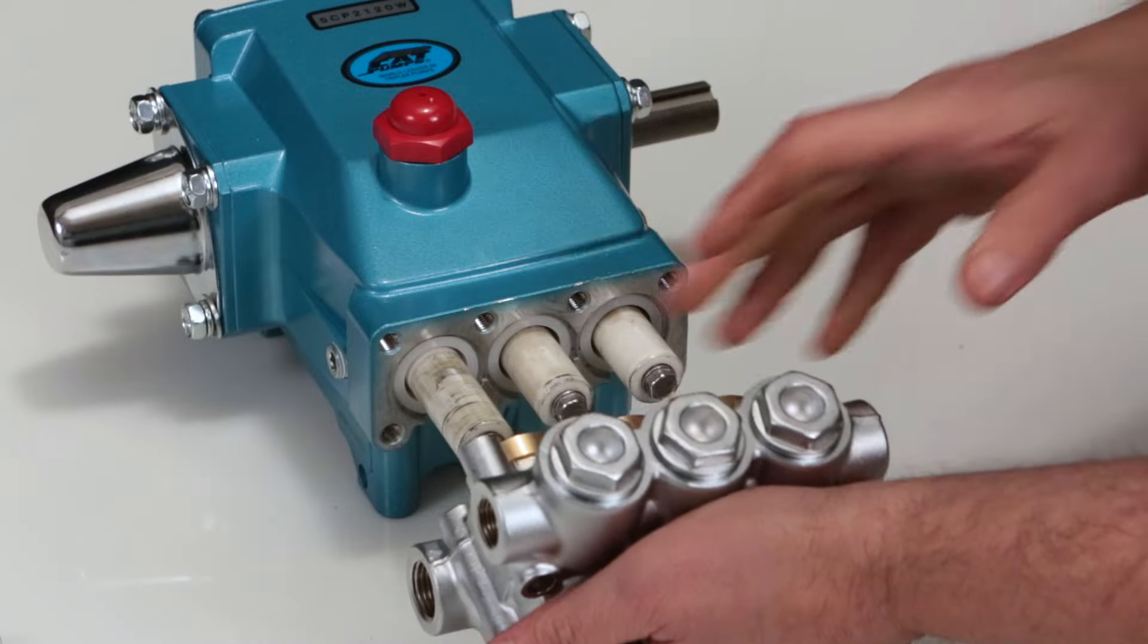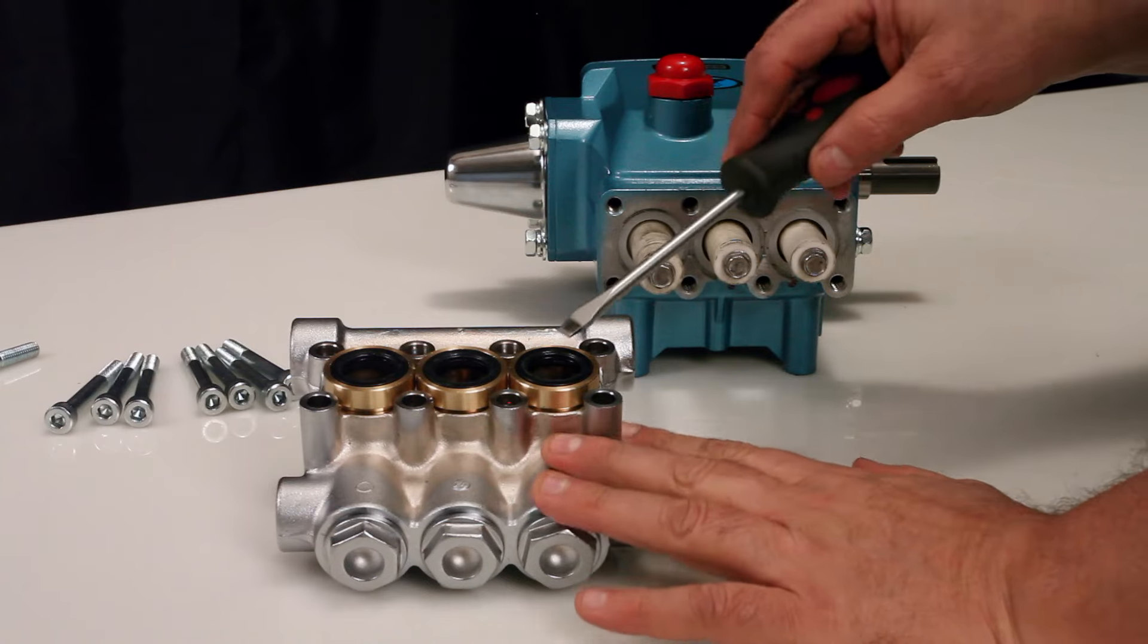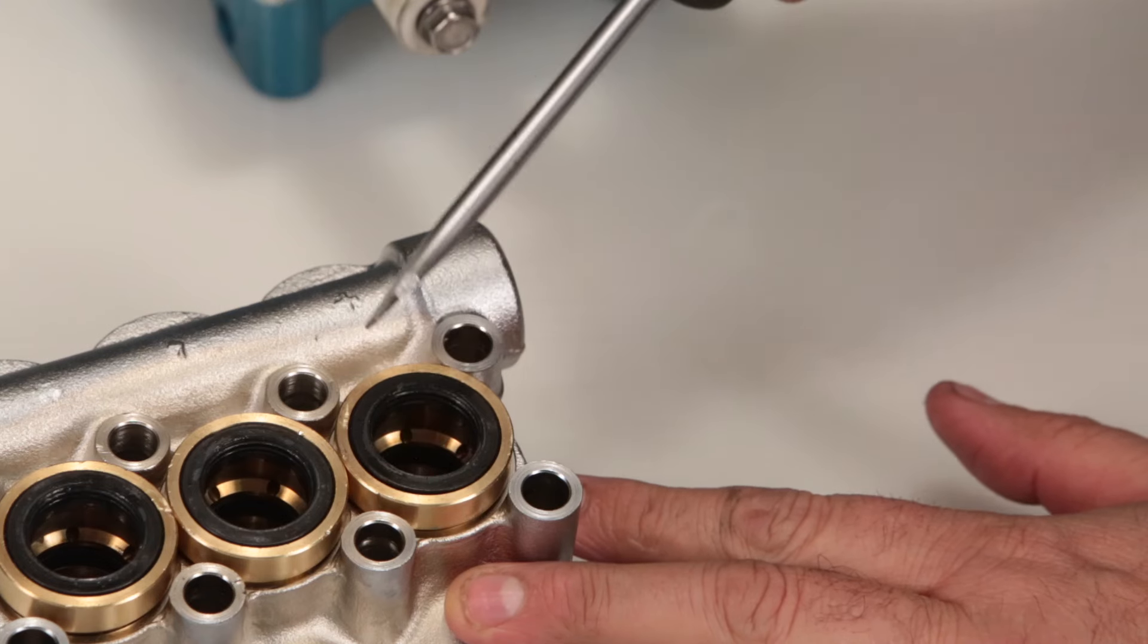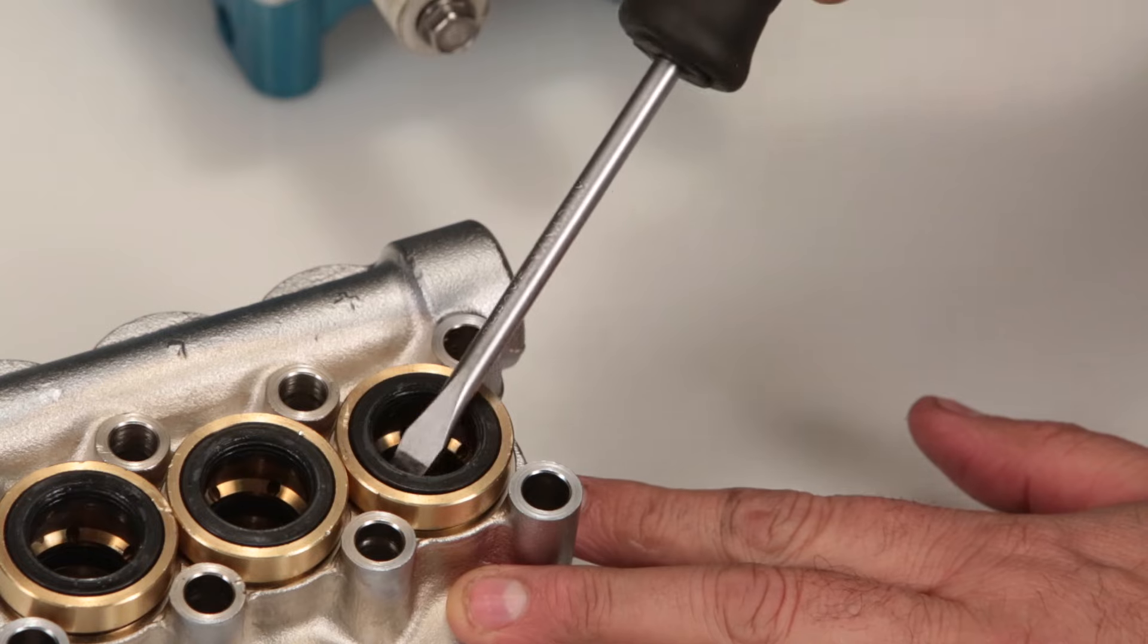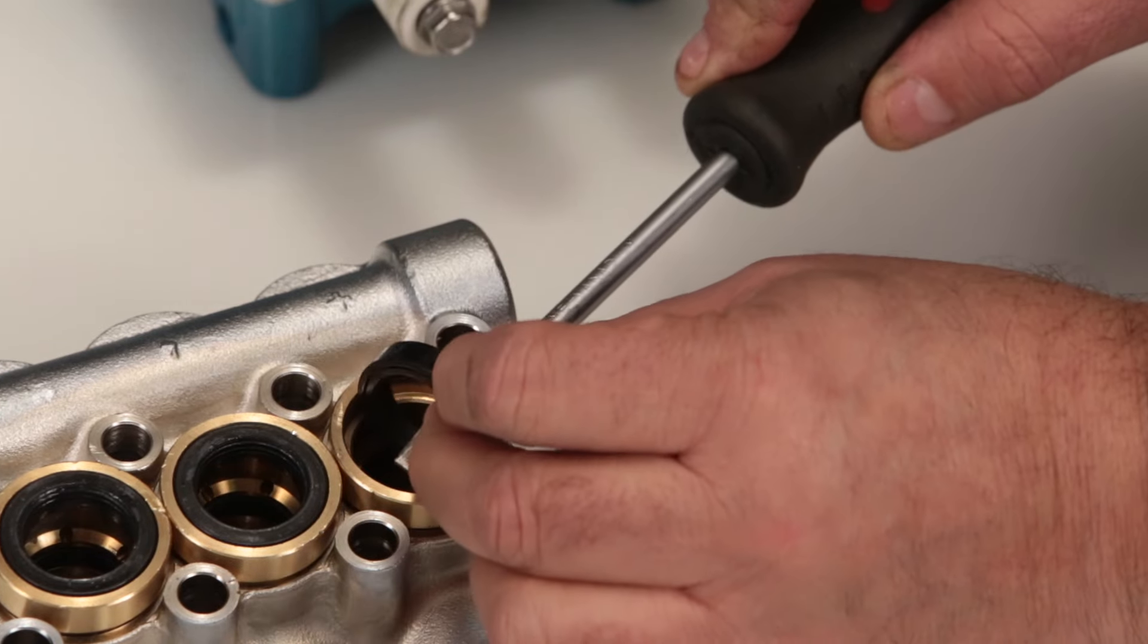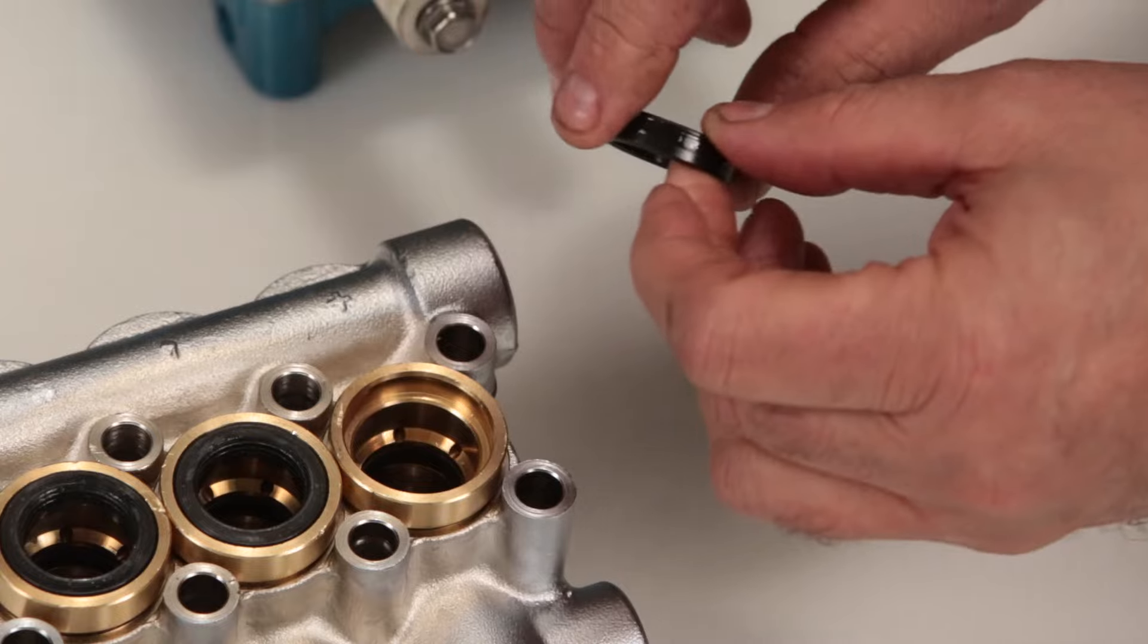Place manifold on flat surface with low pressure seals facing up. Place a flat tip screwdriver under the low pressure seal and pry upward to remove. Be careful not to scratch the inner diameter surface of the seal case where the low pressure seals are located.